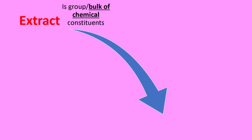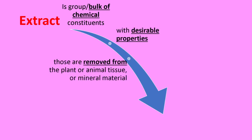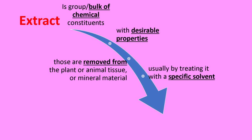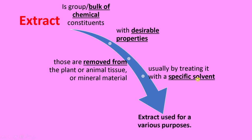So let's start. What is meant by extract? Whenever we are using crude drug, the preparation of extract becomes very much necessary. Extract is a group or a bulk of chemical constituents with desirable properties which are removed from plant, animal tissue, or mineral material, usually by treating it with a specific solvent. The four important points are: extract is a bulk of chemical constituents having desirable properties, they are mainly present in tissues, and they are removed from those tissues by using a specific solvent.